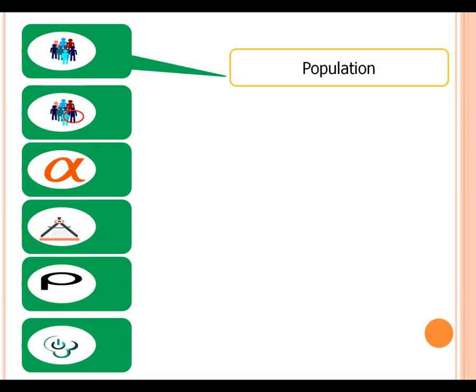Population is the entire group that we want to draw conclusions. Sample is a representative part of population.